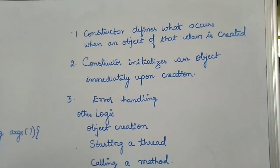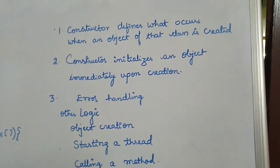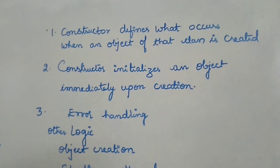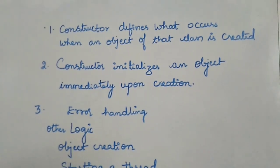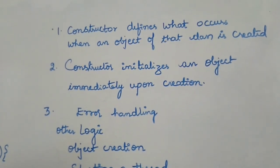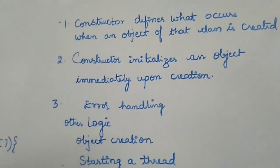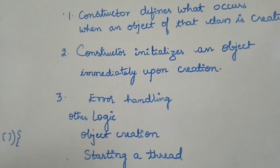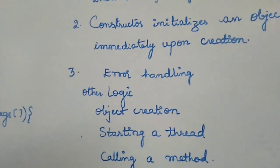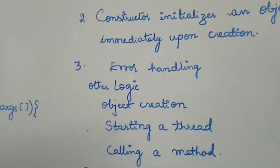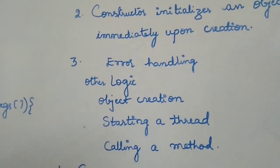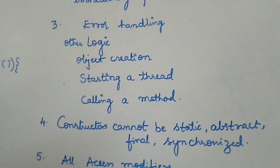Let us look at some important points about constructors. A constructor defines what occurs when an object of that class is created. A constructor initializes an object immediately upon creation — but not only for initialization. It can also be used for error handling, writing other logic, object creation, starting a thread, and calling a method.